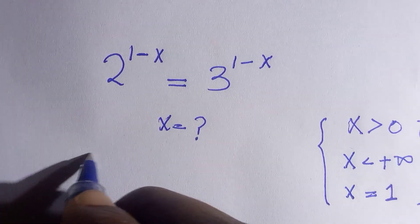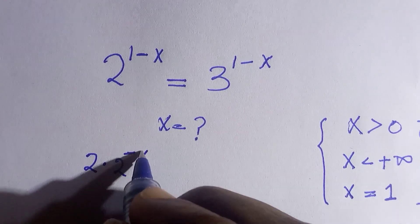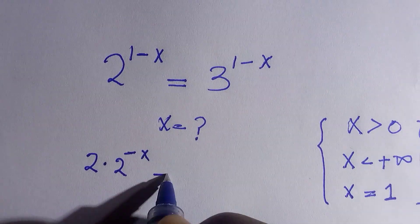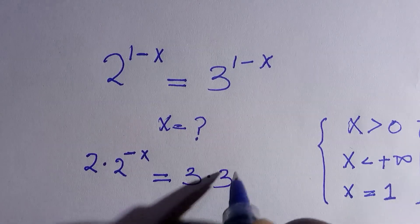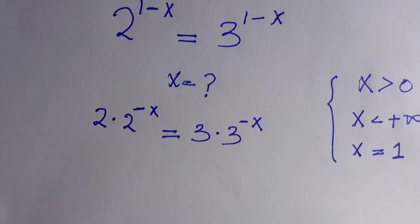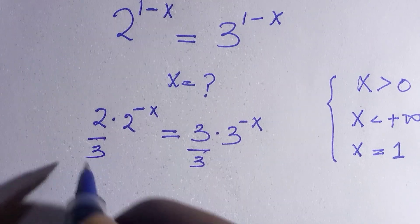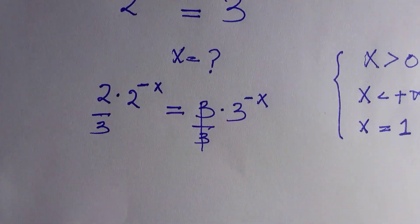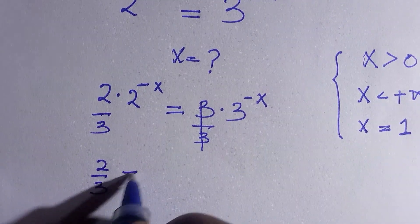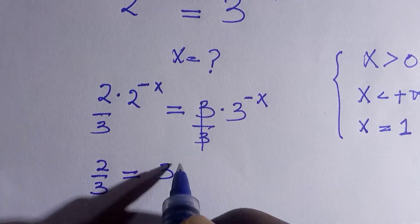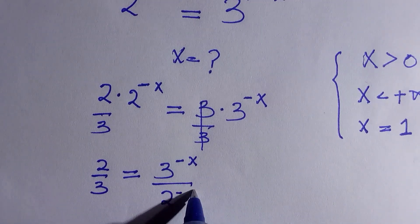So this question — if you separate this as 2 dot 2 to the power of minus x, that equals 3 to the power of 1 dot 3 to the power of minus x. And if I divide both sides by 3, then we have 2 divided by 3. And also divide by 2 to the power of minus x, giving 2 to the power of minus x divided by 2 to the power of minus x.